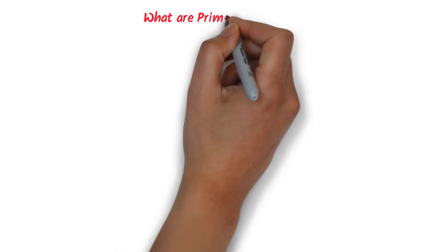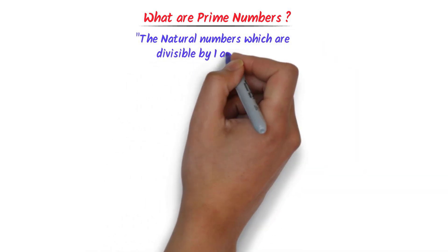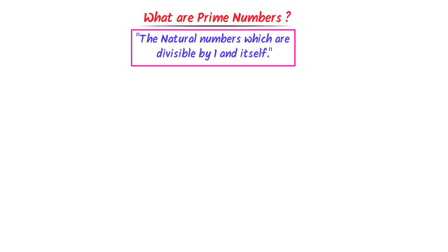Now, what are prime numbers? We define prime numbers as the natural numbers which are divisible by 1 and itself. Let me repeat it: the natural numbers which are divisible by 1 and itself are called prime numbers.